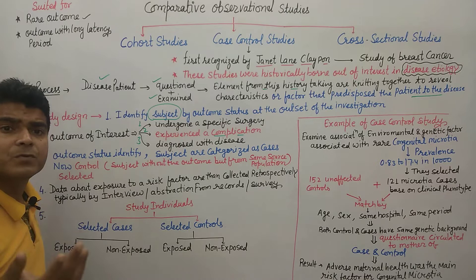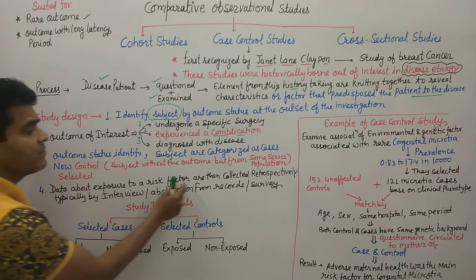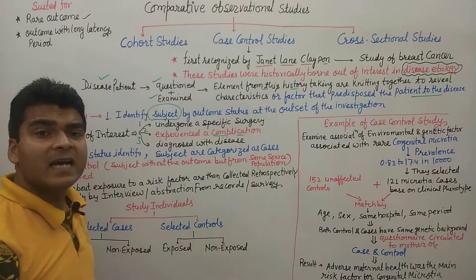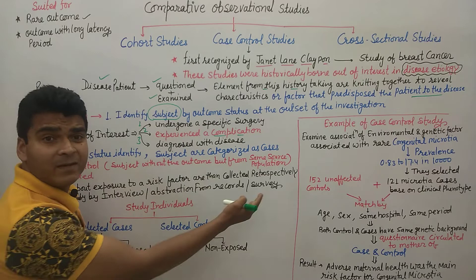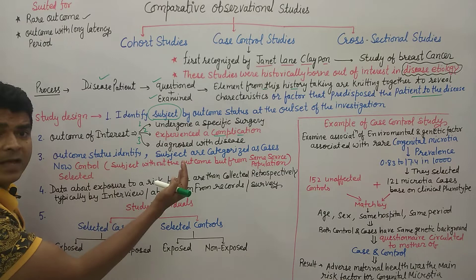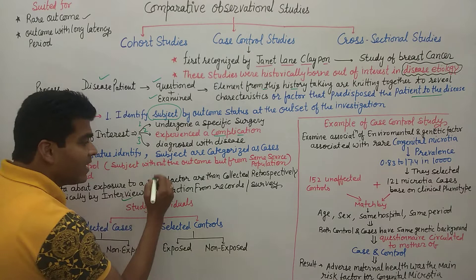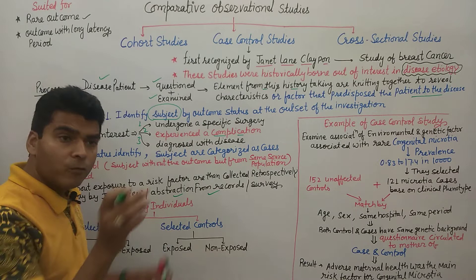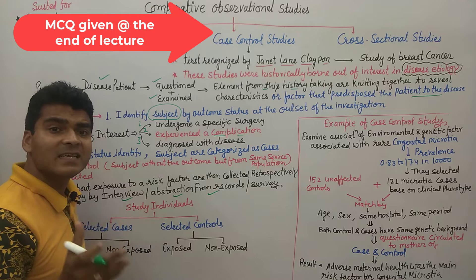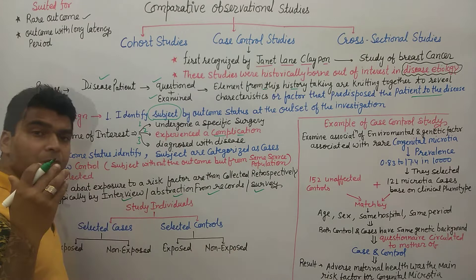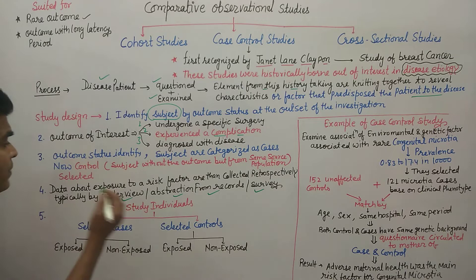Data about exposure to a risk factor are then collected retrospectively, because case control studies are generally performed retrospectively. Data is collected from cases and controls through questionnaires, interviews, and abstraction from hospital records — checking what reasons caused the disease. Survey methods can also be used.